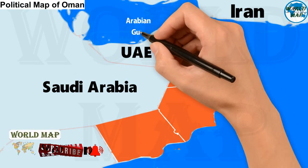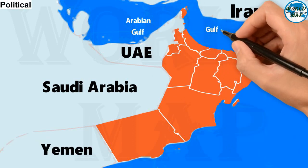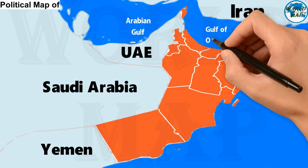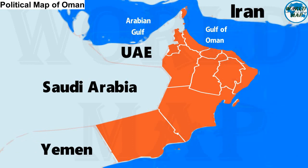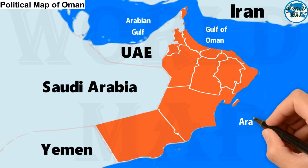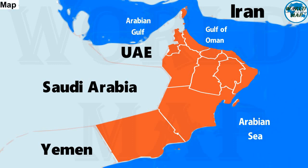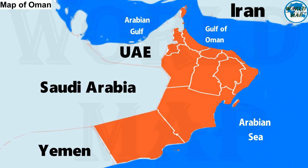With an area of 309,500 square kilometers, the sultanate is slightly smaller than Poland, or somewhat larger than the U.S. state of Arizona. The Sultanate of Oman is divided into 11 Governorates.